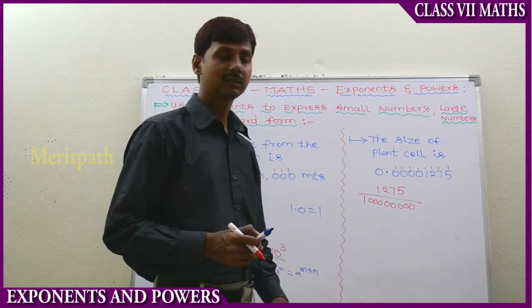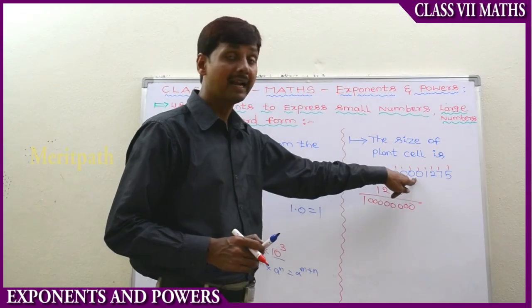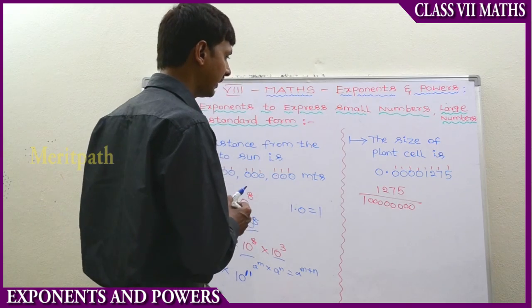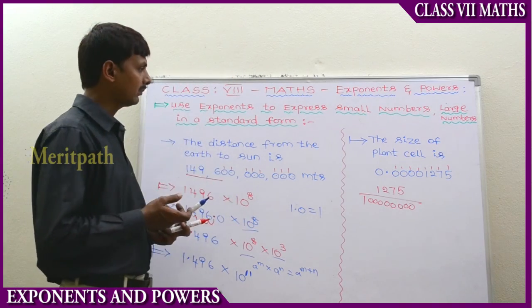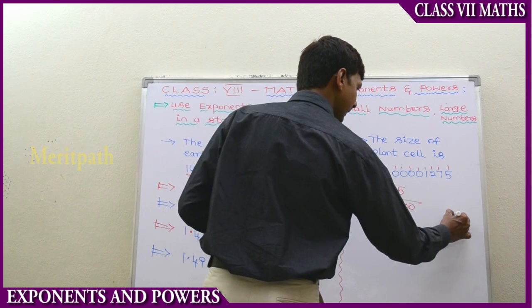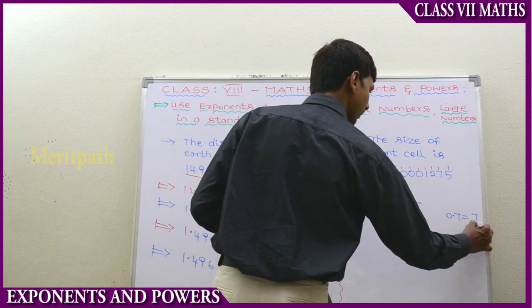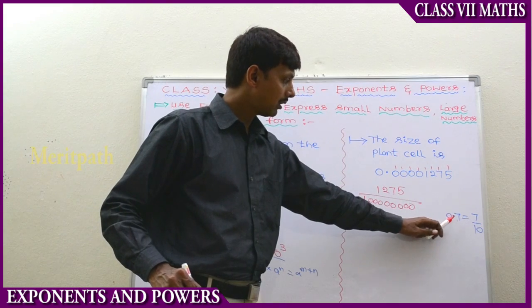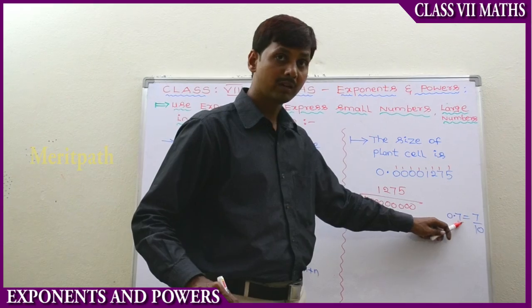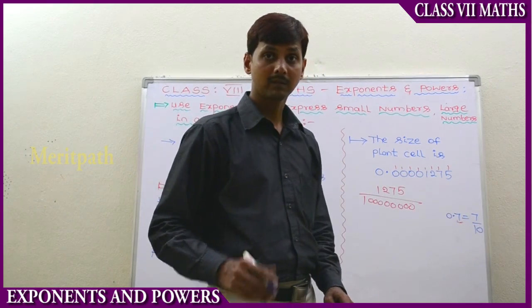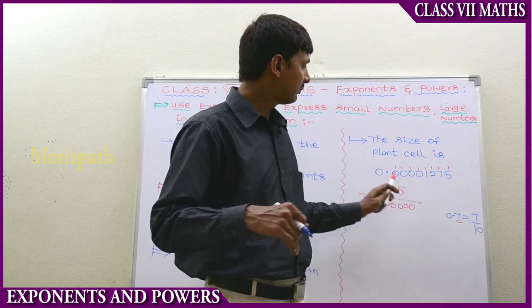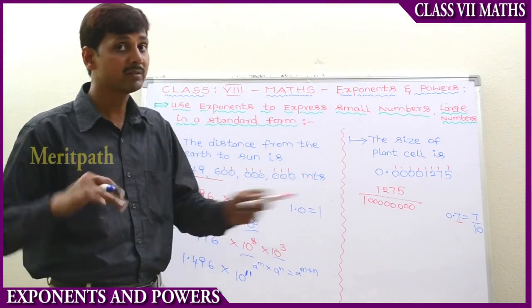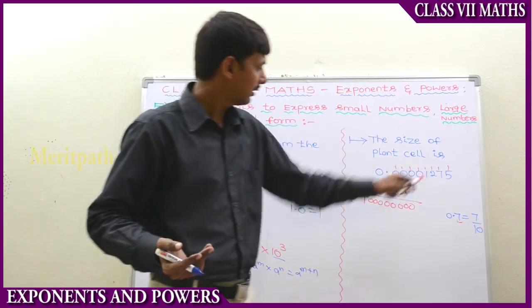For example, 0.7 is 7 by 10, because there is 1 decimal place after the point — 1 digit after the decimal, so it becomes divided by 10. Similarly, 0.07 has 2 decimal places so it becomes divided by 100. Here we have 8 decimal places, so we write 8 zeros. So 0.00001275 becomes 1275 divided by 10 to the power of 8.